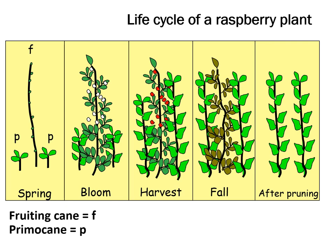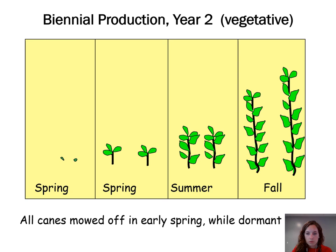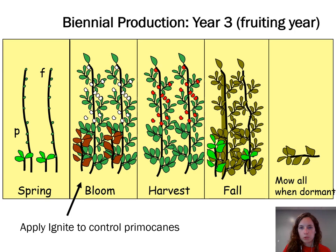Summer-fruiting raspberries typically begin harvest in early July for about three to four weeks. Some growers choose to produce in a biennial system where they fruit a field or row every other year. In year one the floricanes will fruit and the emerging primocanes are controlled. After harvest, the old floricanes and primocanes are mowed down, and then the next year is focused on vegetative growth of those primocanes. The third year is similar to the first where the floricanes are fruited while the emerging primocanes are controlled. This biennial system reduces labour for pruning and makes harvest easier.